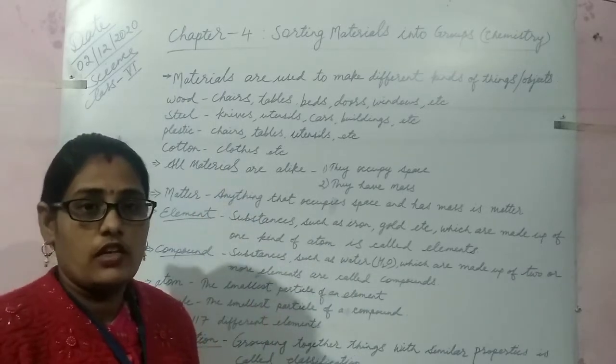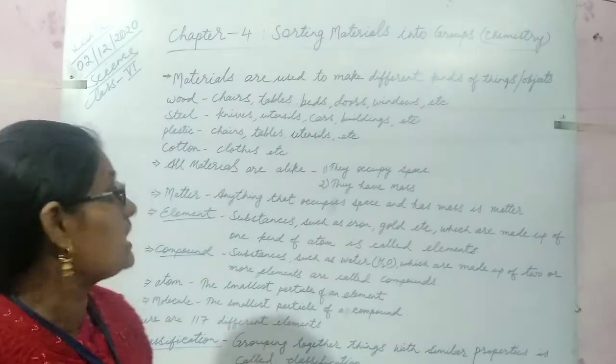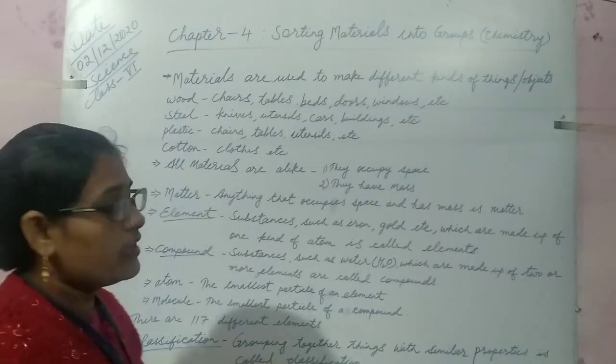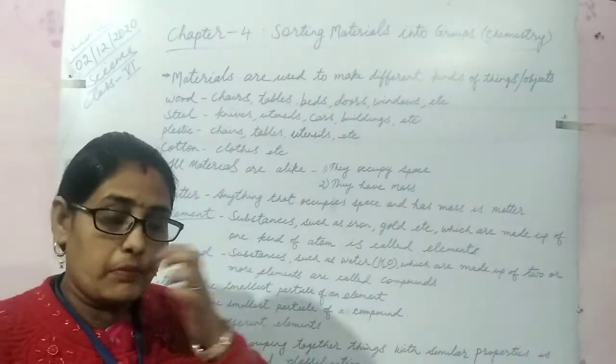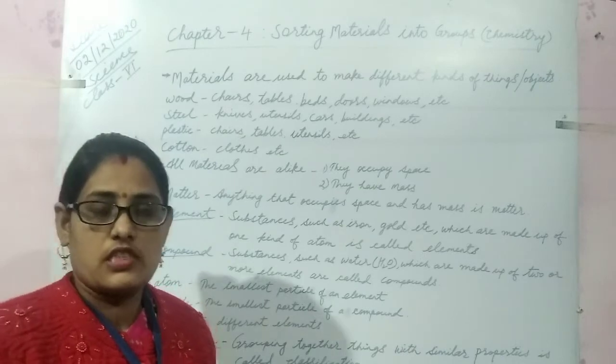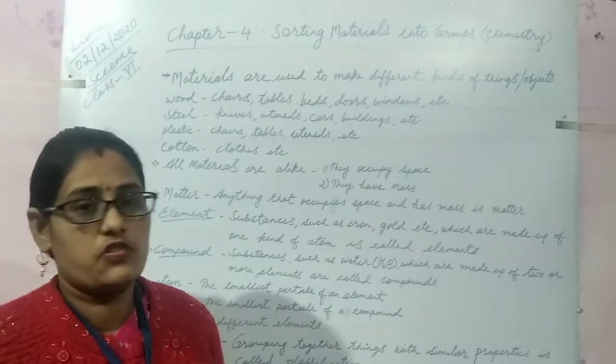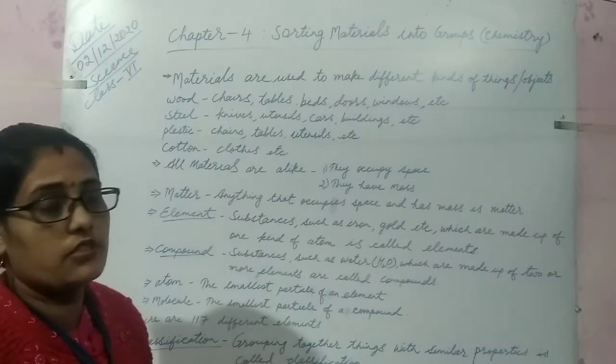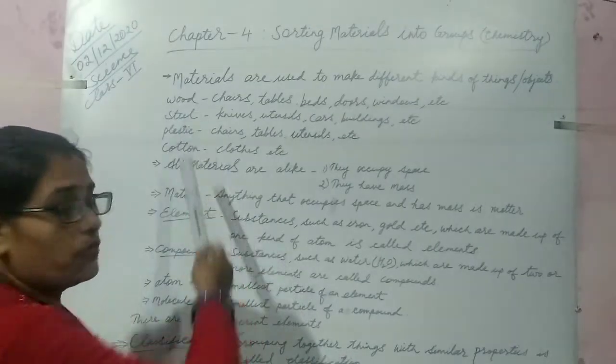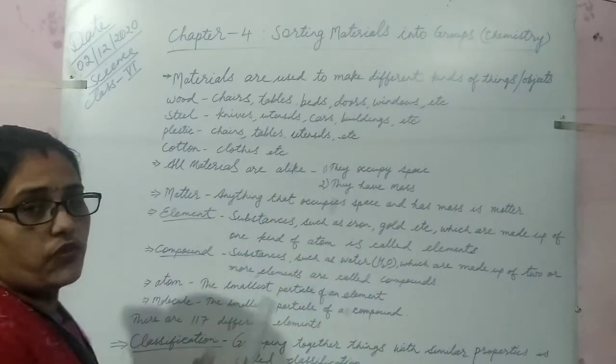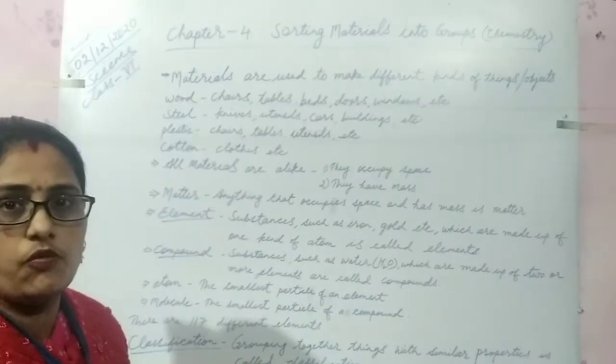First of all I am going to explain you about materials. Materials are used to make different kinds of things or objects. We see many materials around us. For example wood. Chairs, tables, bed, doors, windows etc. are made up of wood.